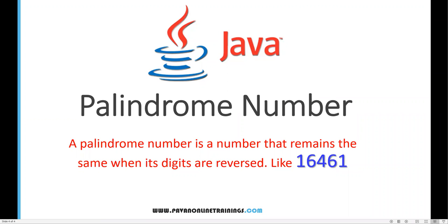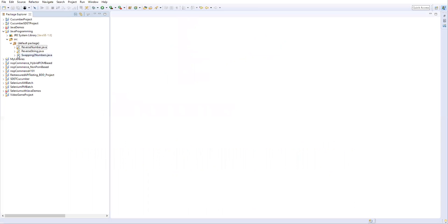To check if a number is a palindrome or not, we need to reverse the number and then compare the reversed number with the original number. If both are equal, we can say it is a palindrome number. We need to use a logic to reverse a number — I have explained how to reverse a number in three different ways in my previous video, and I'm going to reuse that same logic here.